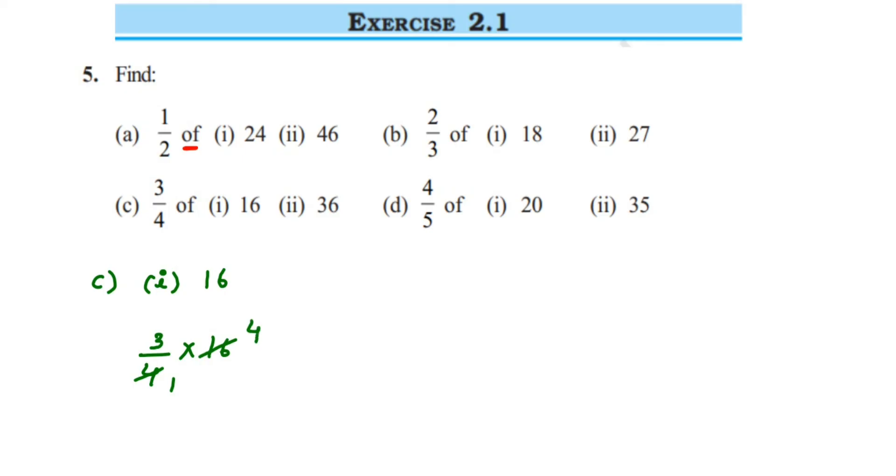Then the next number we have here is 36. So 3/4 of 36. Four and 36 can be cancelled directly in four tables, so four ones are four, four nines are thirty-six. It's not necessary you should cancel them directly—you can cancel them in a two table and then keep on cancelling as much as you can, and then multiply. So here I'm cancelling directly in four tables, so three and nine are left in the numerator. Three nines are twenty-seven, so twenty-seven is the answer.